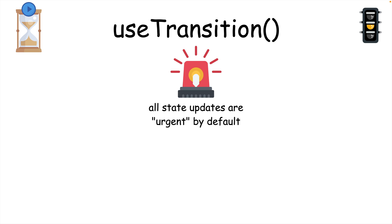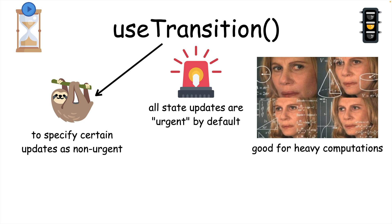In React, all state updates are considered to be urgent. useTransition is a transition hook that allows us to specify that certain state updates are not urgent. This is helpful for state updates that involve heavy computations, which can lead to a bad user experience if they're executed immediately. We can make our app more responsive by wrapping these state updates in a transition.